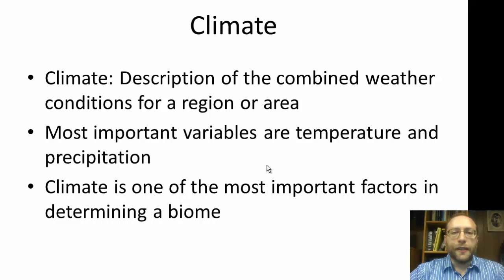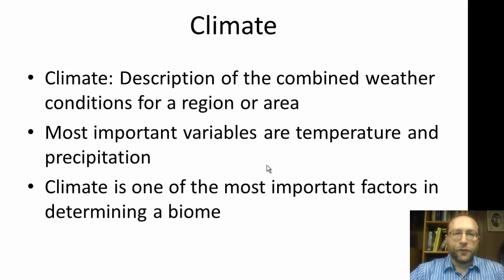Climate is a description of the combined weather conditions for a region or an area. It's not the average weather of an area — it's the combined. When looking at temperature, it's not just the average temperature for an area. You have to look at everything together: what's happening in the winter, the fall, the spring, and in the summer. You don't just look at the average temperature.